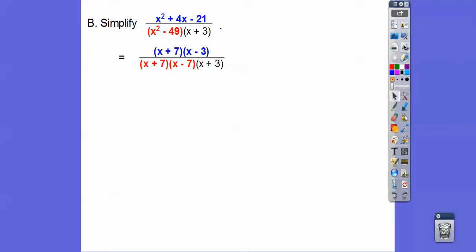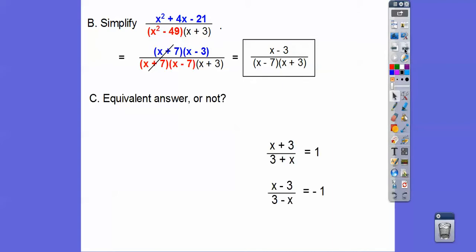And then cancel out the common factors on top and on bottom. And don't forget, if they asked you for the excluded values, x can't equal 7, it can't equal negative 3, but it also can't equal negative 7, because anything that will give you 0 anywhere on those.